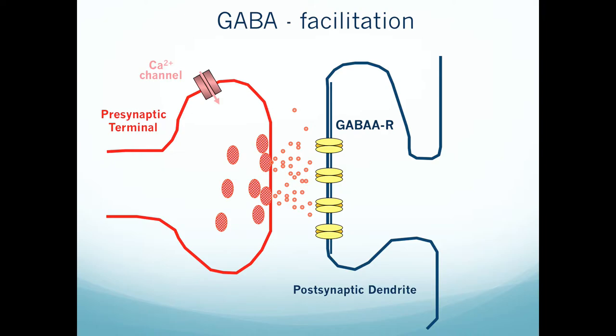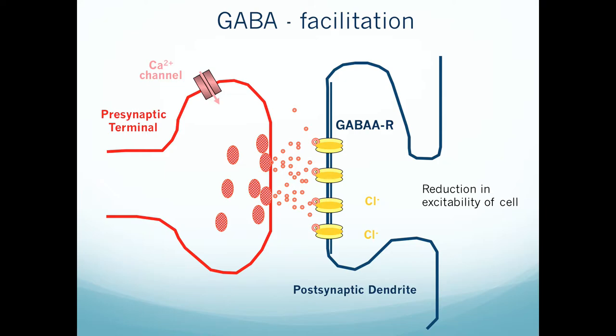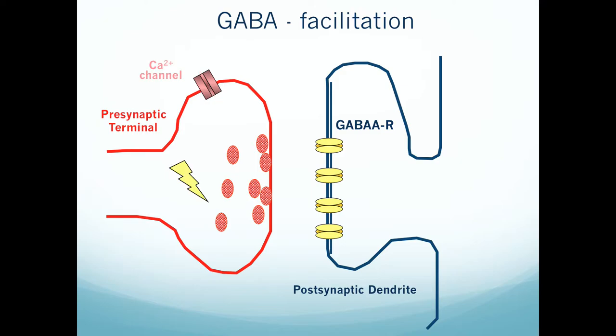GABA diffuses into the synaptic cleft and binds to its two specific sites. The pore channel opens — ligand-gated ionotropic receptors. Chloride enters the postsynaptic cell, lowering the charge and making it very difficult to generate an action potential, because we're much further from threshold. Threshold is the charge at which voltage-gated channels along the axon open to traffic the message down for vesicles to dock and fuse.